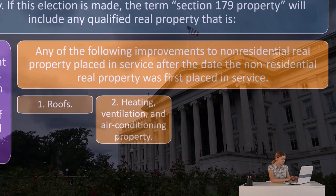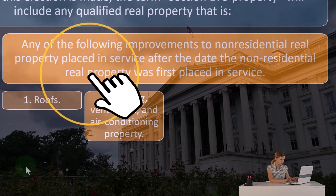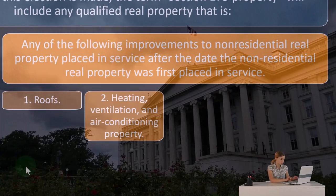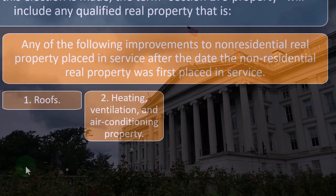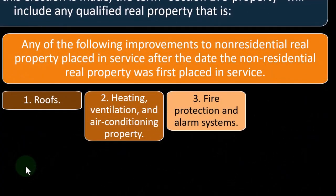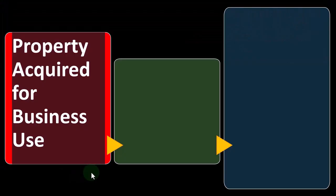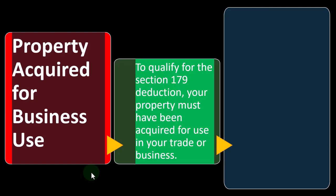The qualifying improvement types are: number one, roofs; number two, heating, ventilation, and air conditioning property; number three, fire protection and alarm systems; and number four, security systems — property acquired for business use.